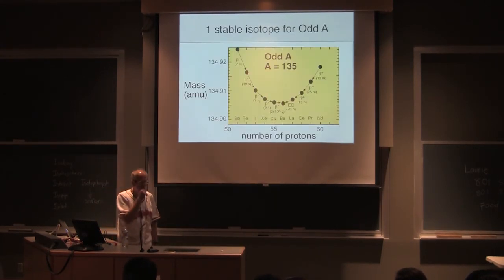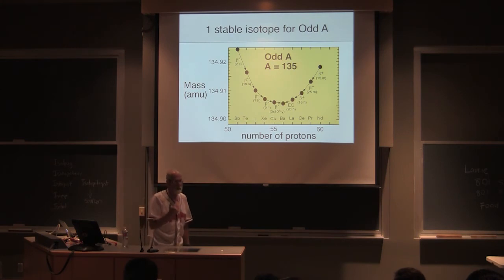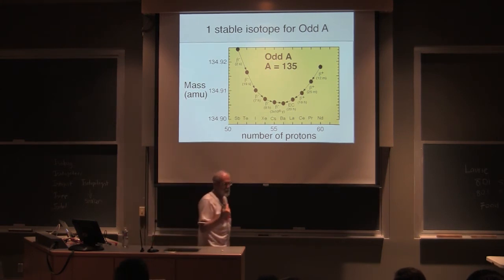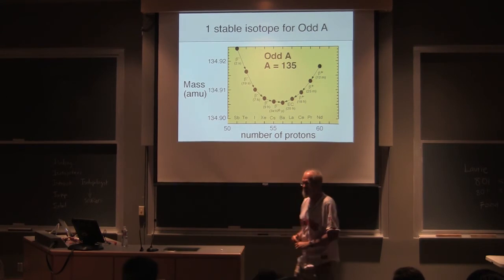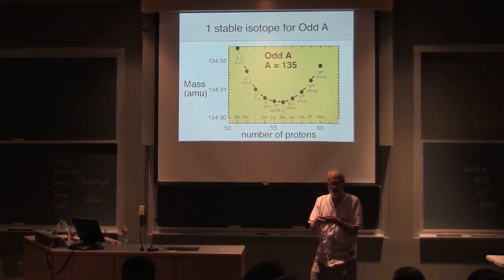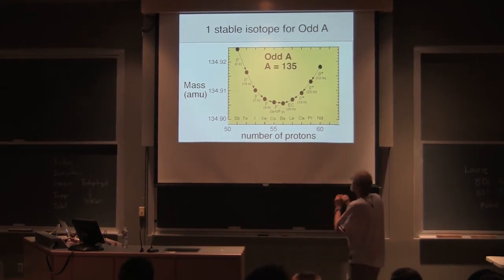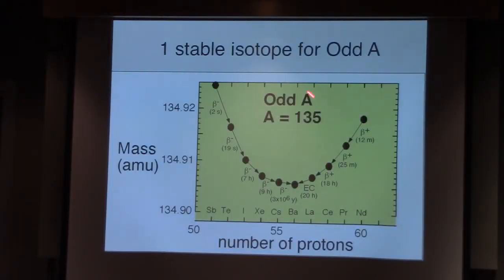So now why are there certain configurations of elements? So if you just take the simple mass. We know that loss of mass is binding energy. So let's just take an odd A. So let's just look at mass 135 and we go from antimony, tellurium, iodine, xenon, cesium, barium, lanthanum, cerium, praseodymium, neodymium. You guys all knew that, I didn't have to repeat it. If we look at the mass of every one of those, they have slightly different masses.